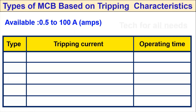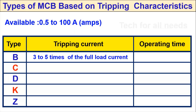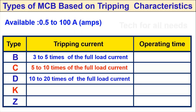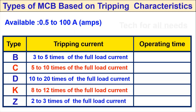Current rating is up to 100 amps. For D type, the magnetic trip range is 10 to 20 times full load current. For K type, it is 8 to 12 times full load current. For B type, it is 3 to 5 times full load current, with an operating time of 0.04 to 13 seconds.